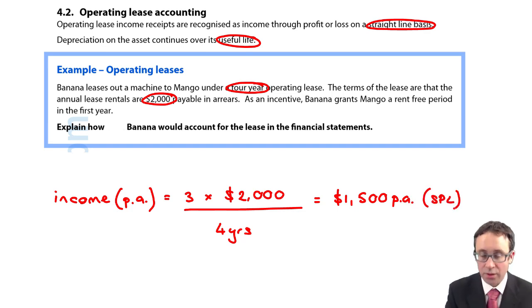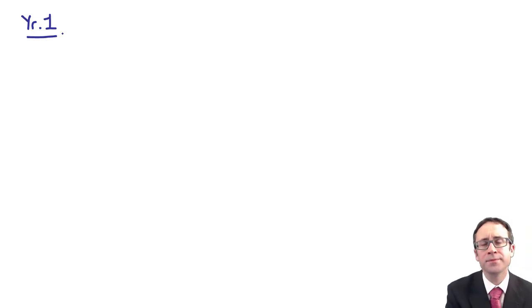Again that goes to the statement of profit or loss so that is there for your income. Just be careful from the lessor's perspective we're looking at things now with regards to income.